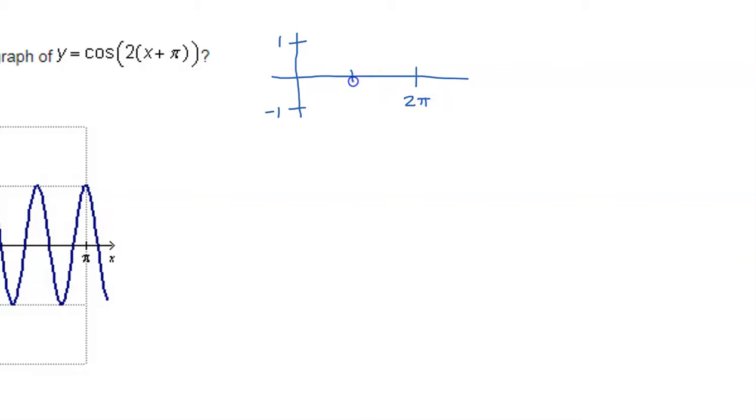Which means, at the halfway mark, that'll be pi. Half of that will be pi over two. In between here, that'll be three pi over two. So, the cosine function goes like this.